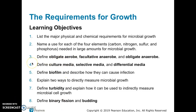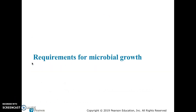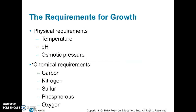Let's talk about the requirements for microbial growth — what do microbes need in order to grow and survive. There are two types of requirements: physical requirements, such as the right temperatures, pH, and osmotic pressure; and chemical requirements, which include certain elements needed in the right amounts — carbon, nitrogen, sulfur, phosphorus, and oxygen.